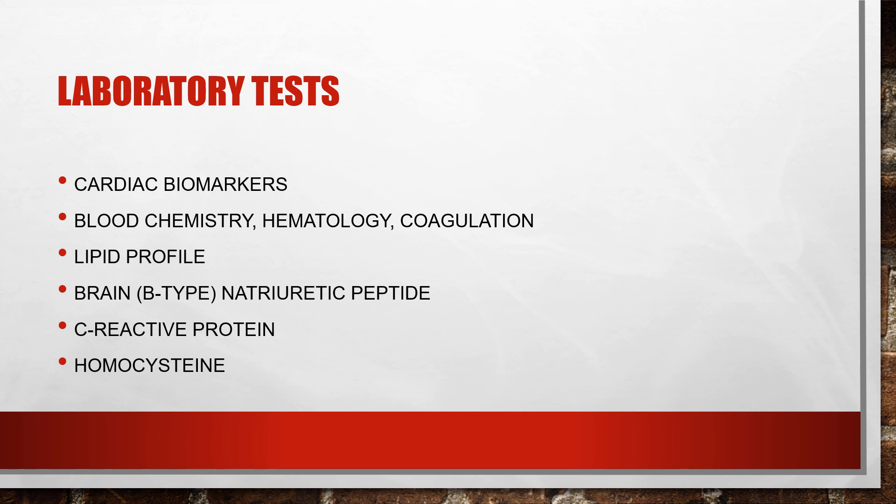Brain natriuretic peptide, or BNP, is a neurohormone that helps regulate blood pressure and fluid volume. It is secreted from the ventricles in response to too much fluid, and helps us determine if someone is in heart failure, how bad their heart failure is, and whether it is getting better or worse. C-reactive protein is a blood test that checks for inflammation in the body; while not cardiac-specific, it can help assess risk for cardiovascular disease from excess inflammation.